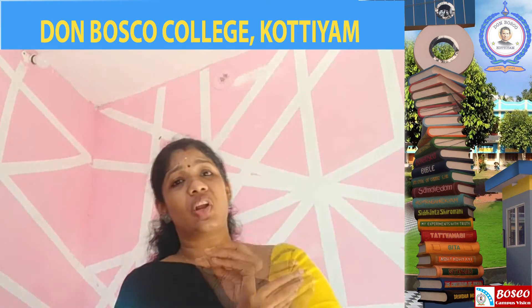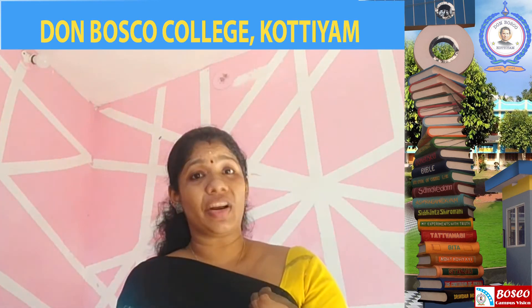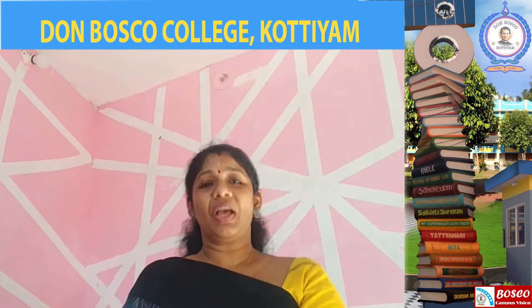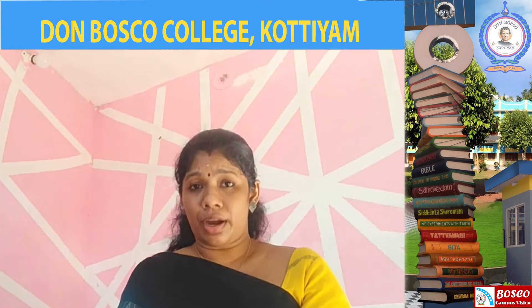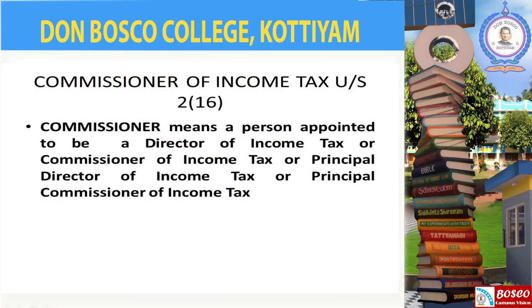The Assessing Officer's powers are confined — meaning the Assessing Officer cannot exercise any power beyond what is assigned. The Commissioner of Income Tax is defined under Section 2, Sub-section 16. Commissioner means a person who is directed to be a Commissioner of Income Tax, or Director of Income Tax, or Principal Director of Income Tax, or Principal Commissioner of Income Tax.